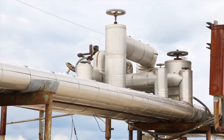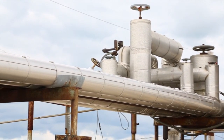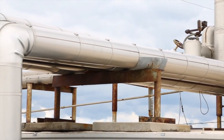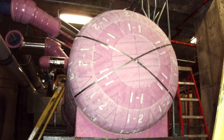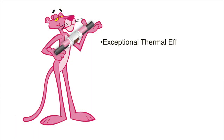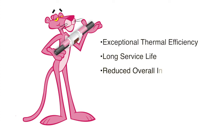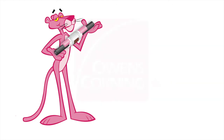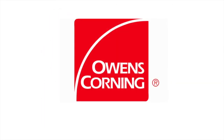Whether a large or small scale application, you have a choice for your XPS pipe insulation requirements. Owens Corning insulation is a high-performance, dust-free foam product with exceptional thermal efficiency, long service life, and reduced overall installation costs, manufactured in the USA. Choose pink insulation for your next XPS pipe insulation job.